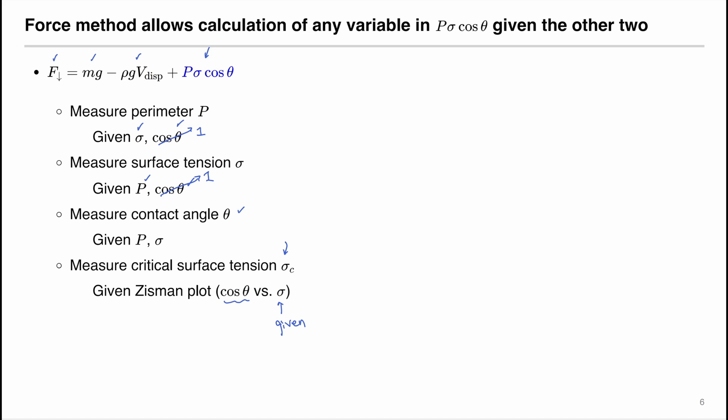In this video, I introduced the theory for the force method of partial immersion, which allows us to determine the perimeter, surface tension, or contact angle when given two of them. We can also use contact angle measurements to determine the critical surface tension of a low-energy solid by using the Zisman plot method.